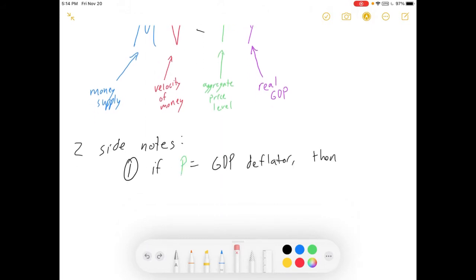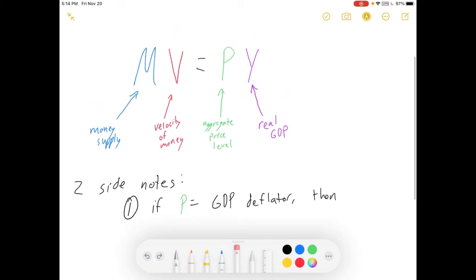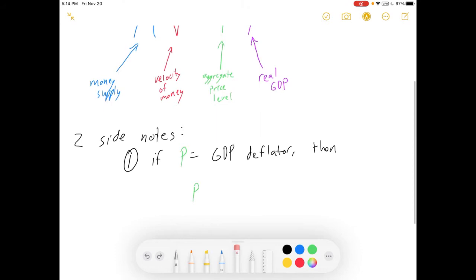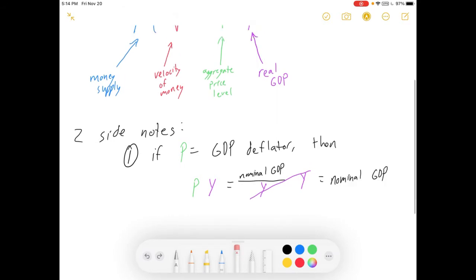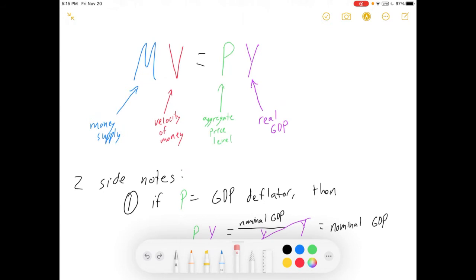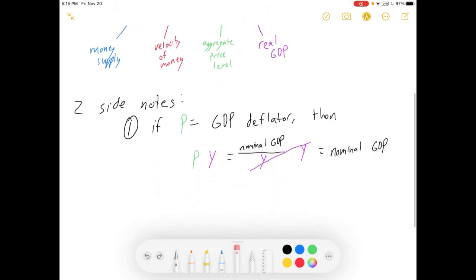So, two side notes about this. One is that if price is given as the GDP deflator, then we can rewrite this right-hand side. P times Y is equal to, let's see, substitute in the GDP deflator, nominal GDP divided by real GDP. And then P times Y. So you have P times Y. There you go. The Y's are going to cancel out. And really, this right-hand side now is equal to nominal GDP.